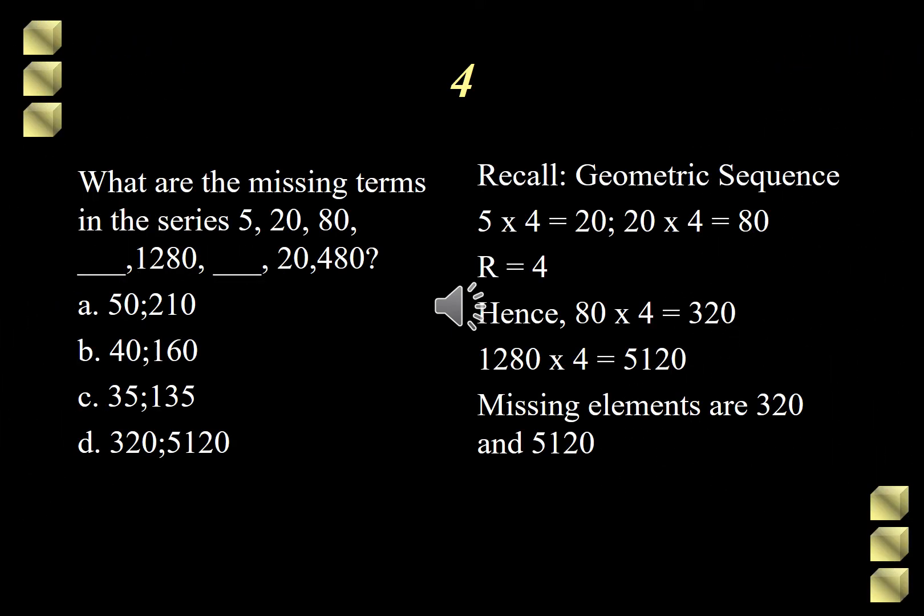Moving on to our fourth question. What are the missing terms of the sequence 5, 20, 80, blank, 1,280, blank, 20,480? The choices are A, 50 and 210, B, 40 and 160, C, 35 and 135, D, 320 and 5,120.